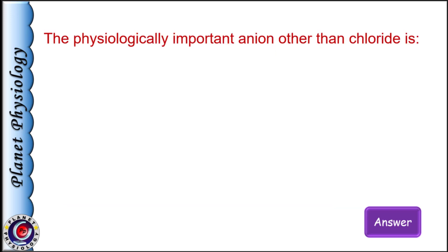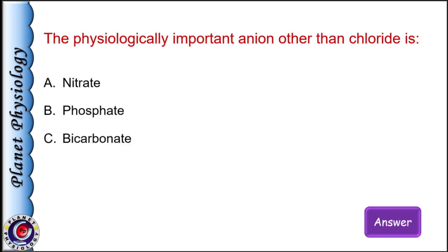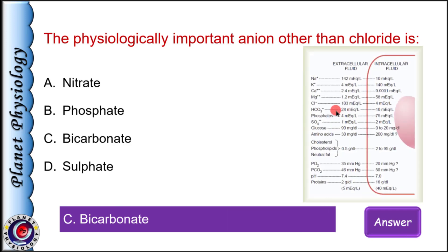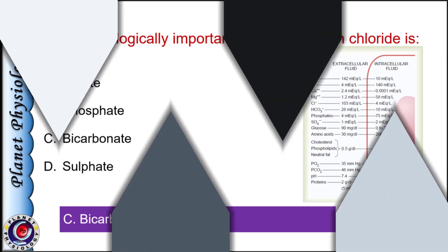The physiologically important anion other than chloride in the extracellular fluid is: a) nitrate, b) phosphate, c) bicarbonate, and d) sulfate. The correct answer is option C: bicarbonate. Bicarbonate concentration in the extracellular fluid is 28 milliequivalents per liter, while chloride is 103 milliequivalents per liter. Bicarbonate ions play a very important role in acid-base regulation and maintaining pH of body fluids.